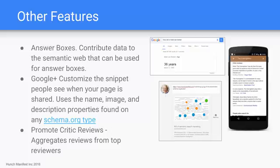You also use structured data to customize the snippets people see when your page is shared on Google+. The name, image, and description will be pulled from the schema.org type if it is available on that page; if not, Google will do its best to guess what the appropriate thing is to share. Finally, you can promote critic reviews — Google is doing its best to aggregate reviews across top reviewers and pull that into search results, which you can enable by identifying those reviews on pages using structured data, or what we'll call aggregate reviews.